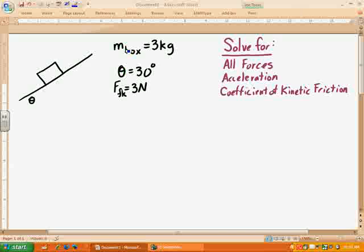We've got some information given to us. The block or the box has a mass of 3 kilograms. We know that the angle of the incline plane or the ramp is 30 degrees. And then it tells us that as the block is sliding, the frictional force, the kinetic frictional force is 3 newtons.